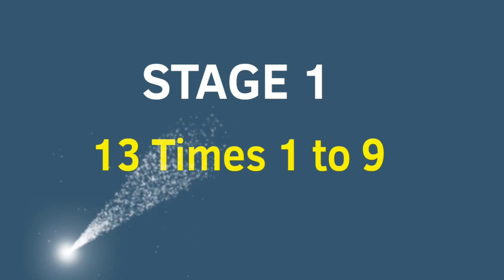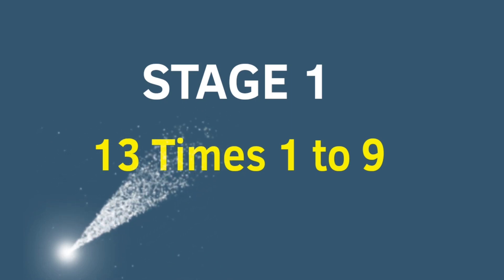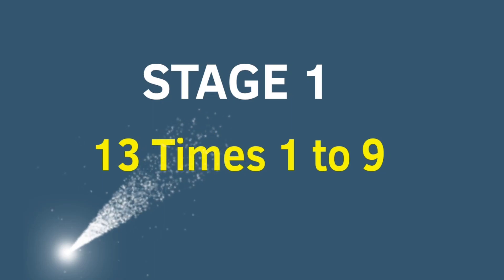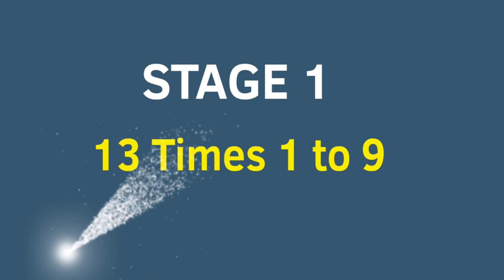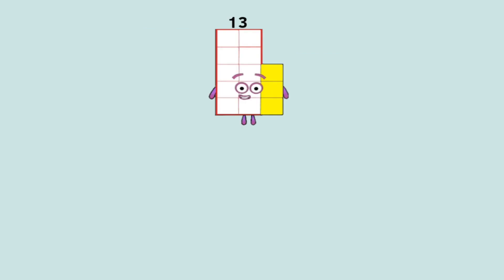Stage 1. Thirteen times one to nine. Thirteen times one equals thirteen.